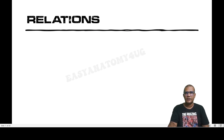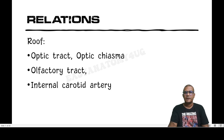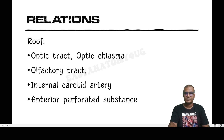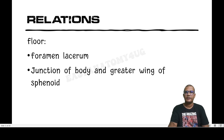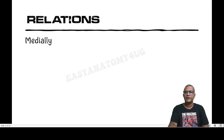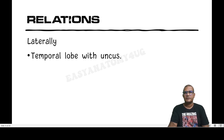Let us discuss the important relations of the cavernous sinus. The roof is related to the optic tract, optic chiasma, olfactory tract, internal carotid artery, and anterior perforated substance of the brain. The floor is related to the foramen lacerum and the junction of the body and greater wing of the sphenoid bone. Medially it is related to the pituitary gland and sphenoidal air sinus within the body of sphenoid. Laterally it is related to the temporal lobe with the uncus.